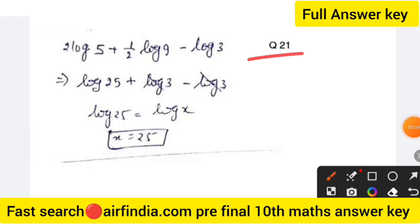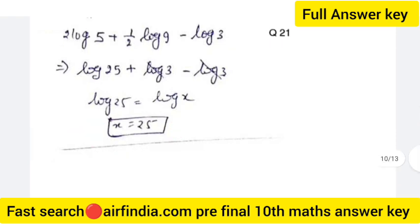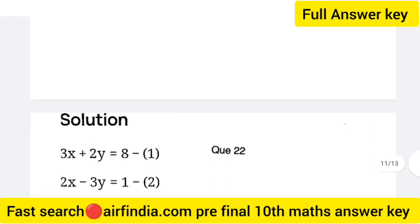Question 21: given 2 log 5 plus 1 by 2 log 9 minus log 3, find the value of x. This simplifies to log 25 plus log 3 minus log 3, which equals log 25. So log 25 equals log x, meaning x equals 25. This is the right answer.